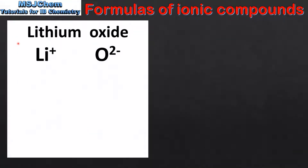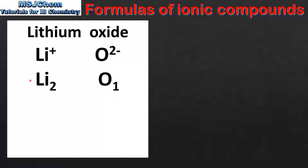In the next examples the ratio of cations to anions is not 1 to 1, because the ions have charges of different magnitudes and opposite signs. Our first example is lithium oxide, composed of lithium ions which have a 1+ charge and oxide ions which have a 2− charge. To determine the formula we're going to use the crossover method. In the crossover method you take the numerical charge on the cation and write it as a subscript for the anion, then take the numerical value of the anion and write it as a subscript for the cation. So the 1 goes from the lithium to the oxygen and the 2 goes from the oxygen to the lithium.